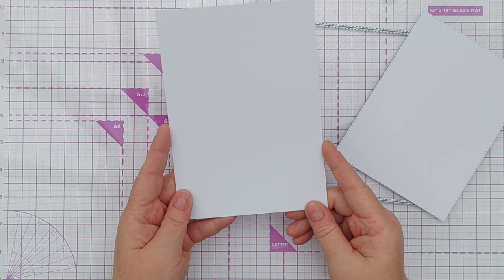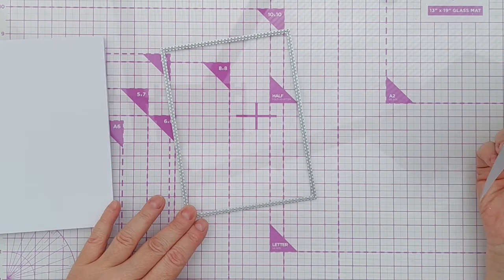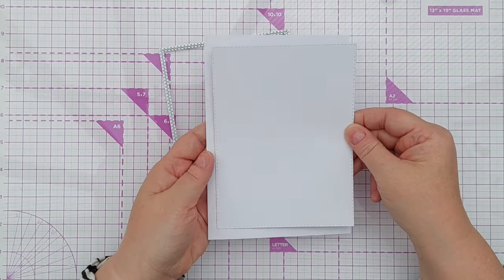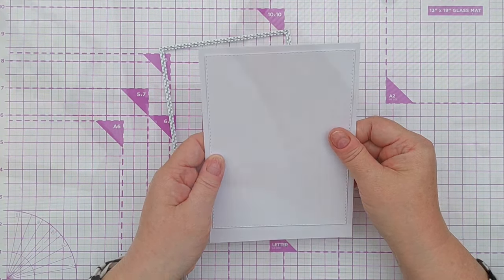So my card blank is going to be approximately 5 by 7 inches and I've cut a panel of smooth white cardstock using this stitched edge rectangle die.